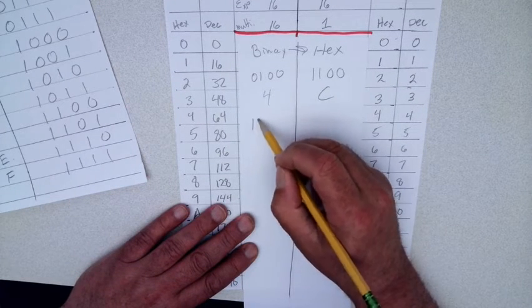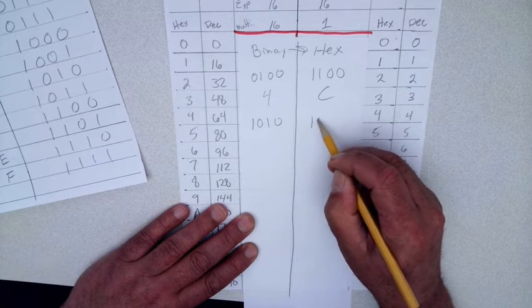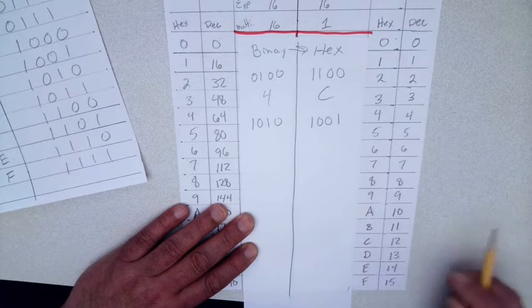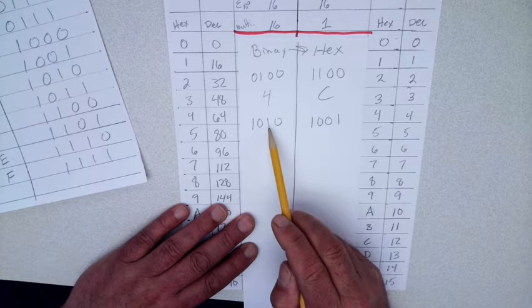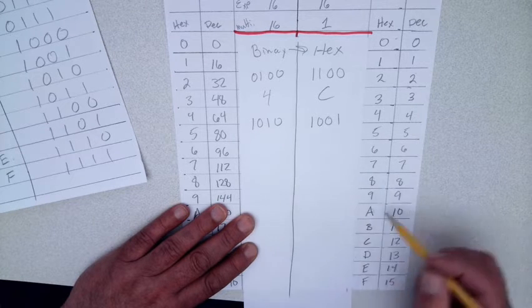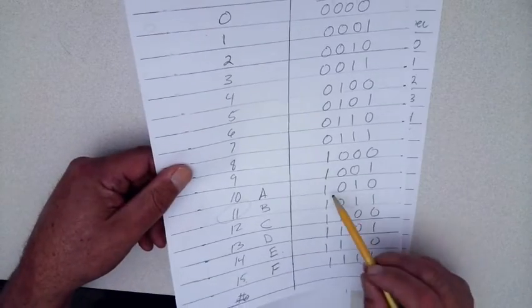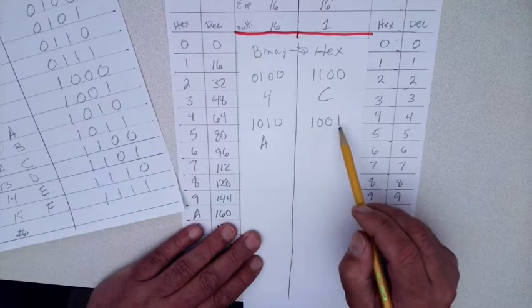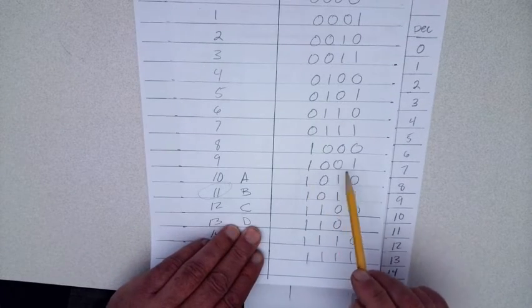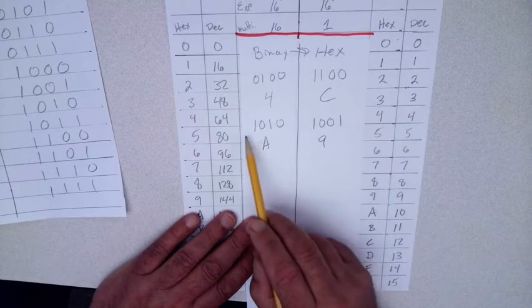If I give you 1010 and 1001: eight plus two is 10, and 10 is an A on our chart. For 1001 — eight plus one is nine. So that gives you A9.